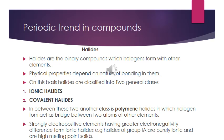Now we will see group compounds — halides, hydrides, and oxides. First, we will see halides. Halides are binary compounds which halogens form with other elements. Their physical properties depend on bonding nature. We have two main types: ionic halides and covalent halides. A third type is polymeric halides, in which a halogen atom acts as a bridge between two atoms of other elements.